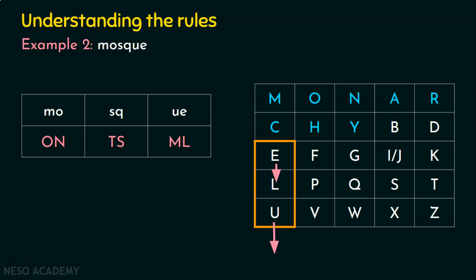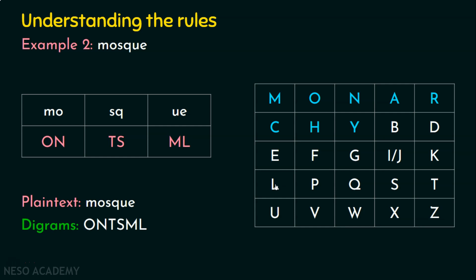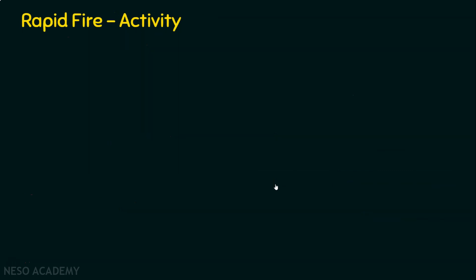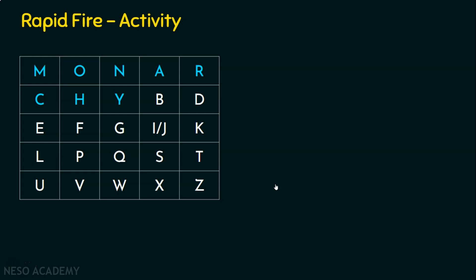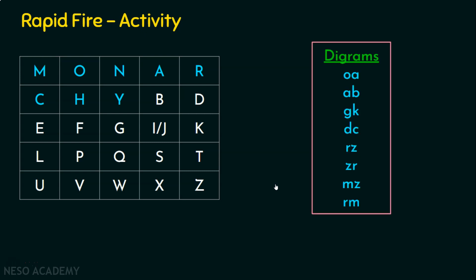So the plaintext 'mosque' gives ciphertext ONTSML. In the next presentation, we will take a different example with a different keyword and work through it manually. We will also explain why Playfair is called a multiletter encryption by comparing it with Caesar cipher, shift cipher, and monoalphabetic substitution. Before we conclude, there's a rapid fire activity using the keyword 'monarchy' — pause the video and try it. Thank you for watching.